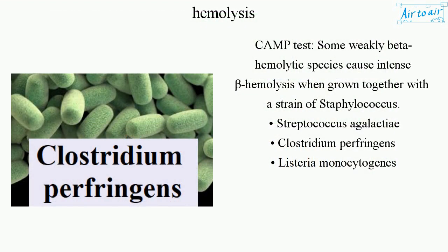CAMP test: Some weakly beta-hemolytic species cause intense beta hemolysis when grown together with a strain of Staphylococcus. Examples include Streptococcus agalactiae, Clostridium perfringens, and Listeria monocytogenes.